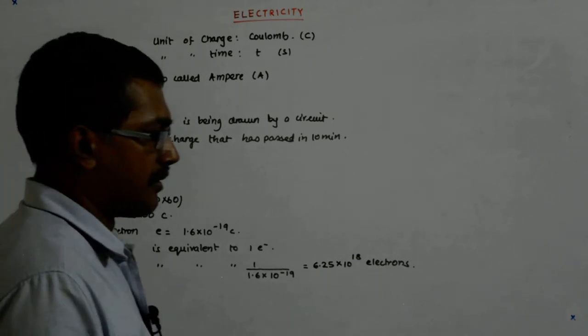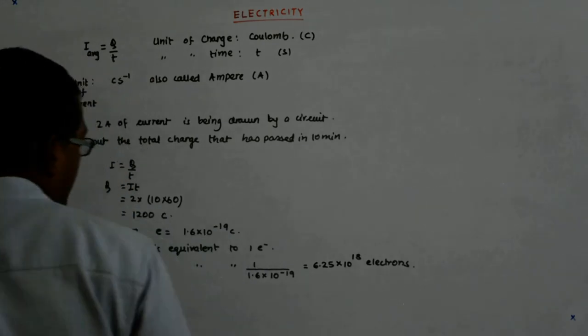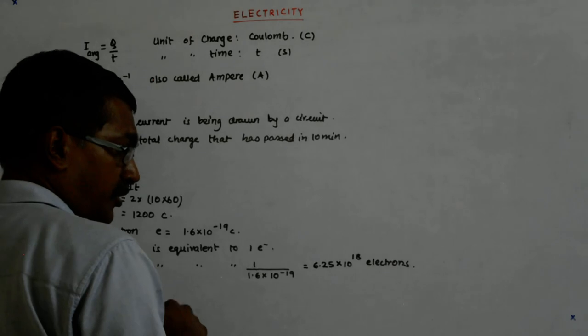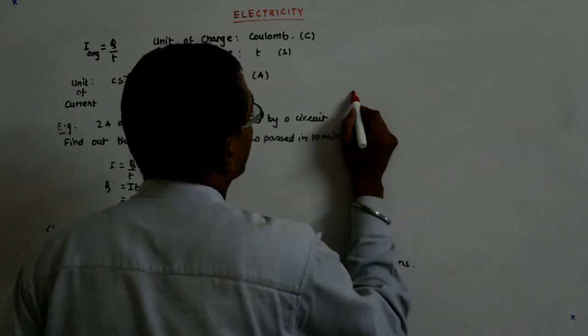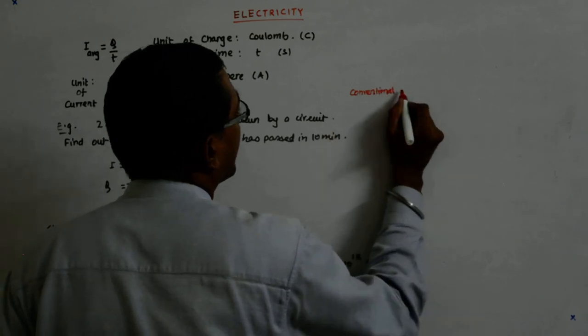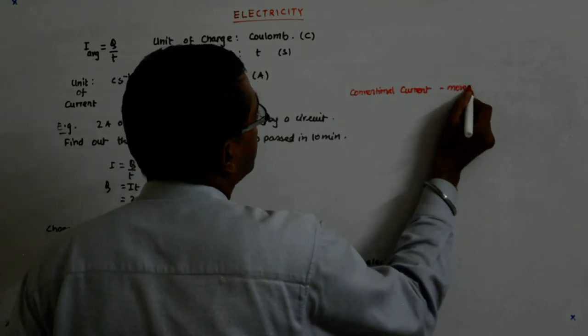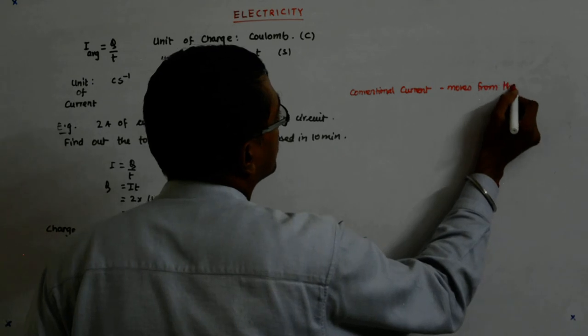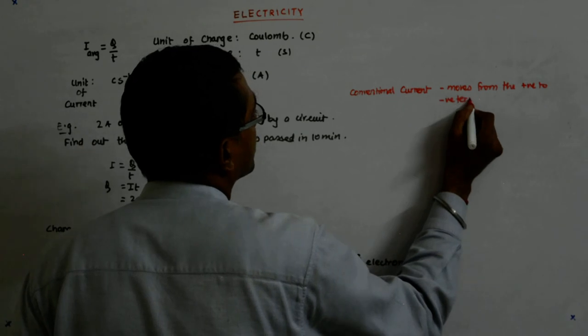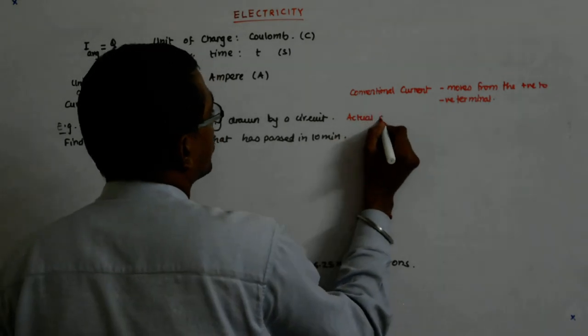And we should also keep in mind that whenever we are dealing with a battery, my conventional current is flowing from positive terminal to the negative terminal. Conventional current, and we had discussed, it moves from positive to negative terminal.